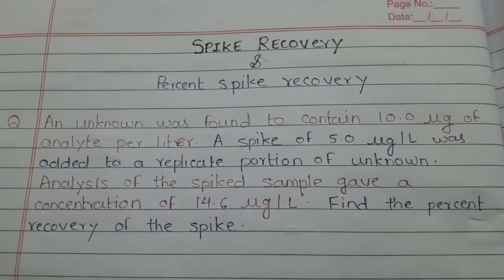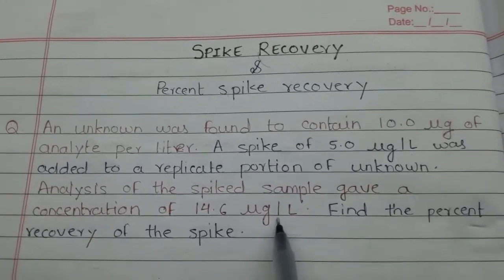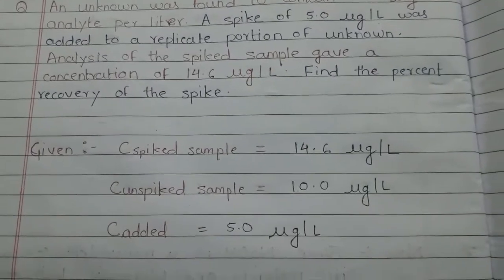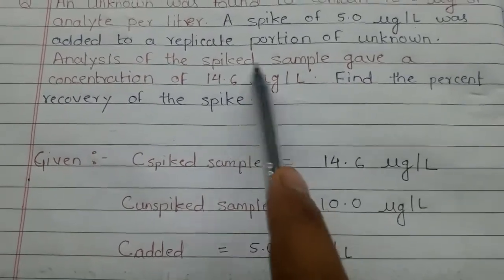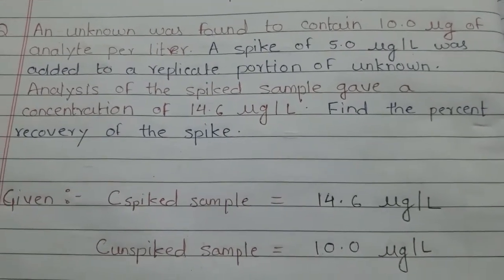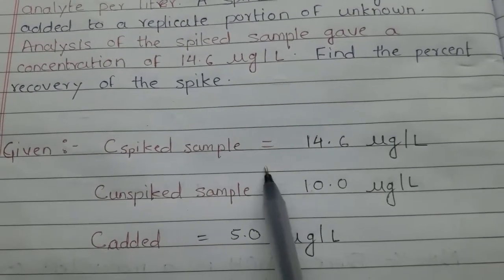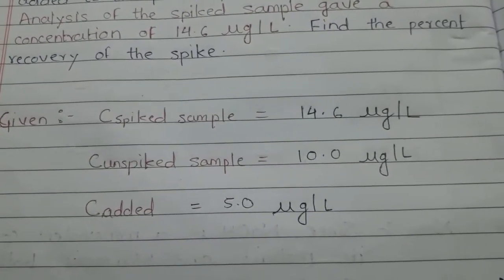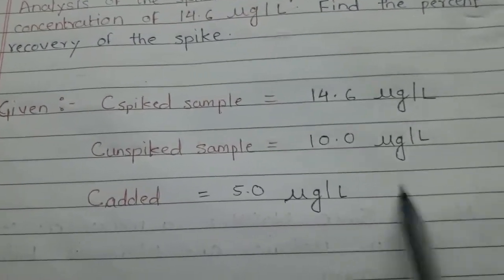When we analyze the spiked sample, we find the concentration is 14.6 microgram per liter. So to summarize what we have been given: concentration of spiked sample is 14.6 microgram per liter, concentration of unspiked sample after analysis is 10 microgram per liter, and concentration added as a spike in the second vial is 5 microgram per liter.